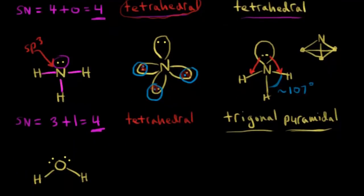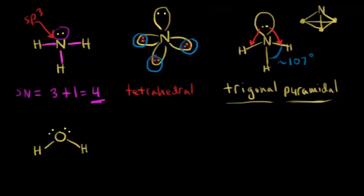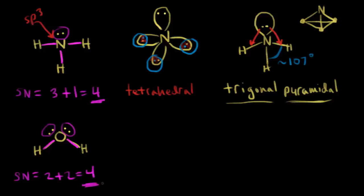Let's do one more example — water. The steric number is equal to the number of sigma bonds: one, two — so two sigma bonds — plus the number of lone pairs of electrons. We have two lone pairs, so two plus two equals four. We need four hybridized orbitals, which means this oxygen is sp3 hybridized.